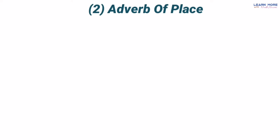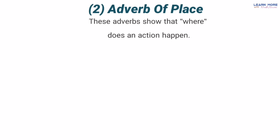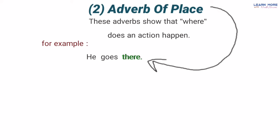Ab number second type hai adverb of place. Yeh bhi bahut easy aur simple hai. Jis tarah adverb of manner humein kisi kaam ke manner ke baare mein, andaaz ke baare mein bata rahe the ke woh kaise hota hai, simply yeh humein kisi jagah ke baare mein batate hain — yani koi kaam kis jagah hota hai, kahan hota hai. For example: 'Where does he go?' — woh kahan jaata hai? 'He goes there' — woh wahan jaata hai. Ab jo word 'there' hai yeh adverb of place hai kyunke yeh uske kaam ki jagah ke baare mein bata raha hai — he goes, woh jaata hai, kahan? There, wahan.